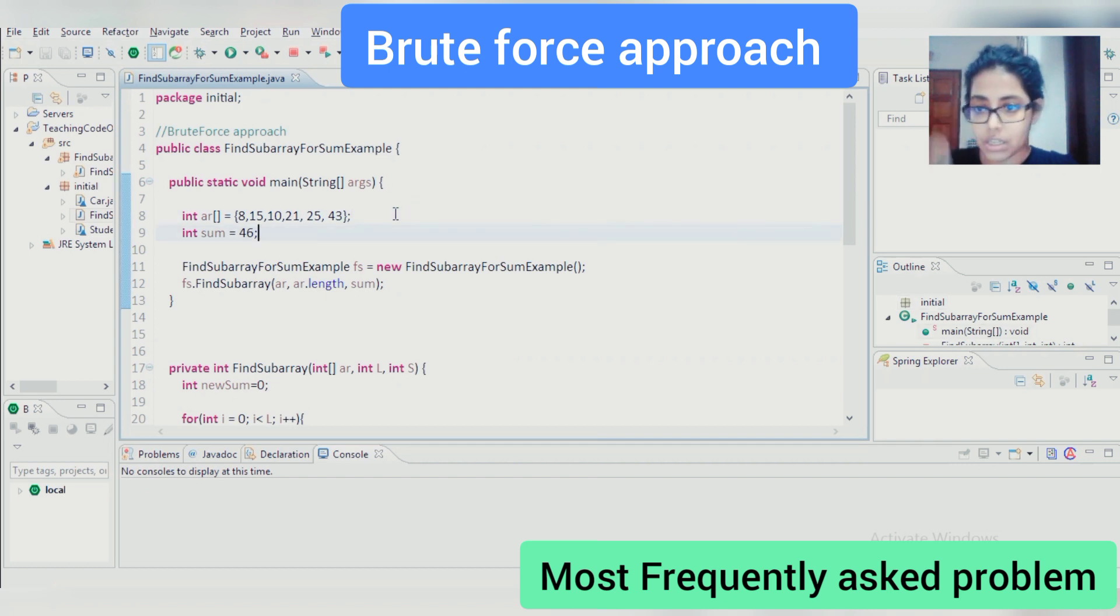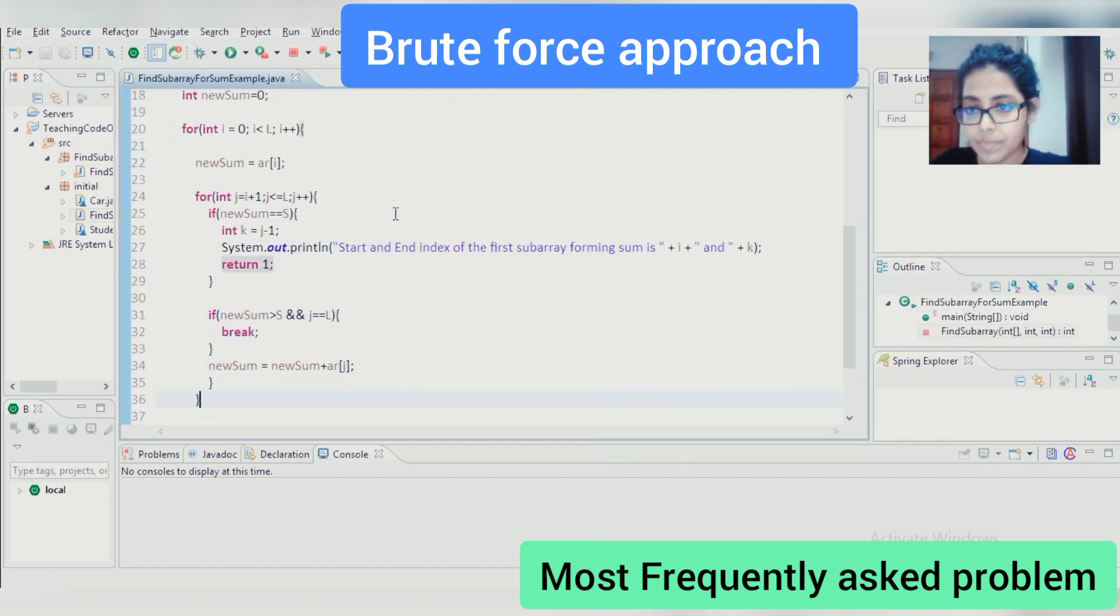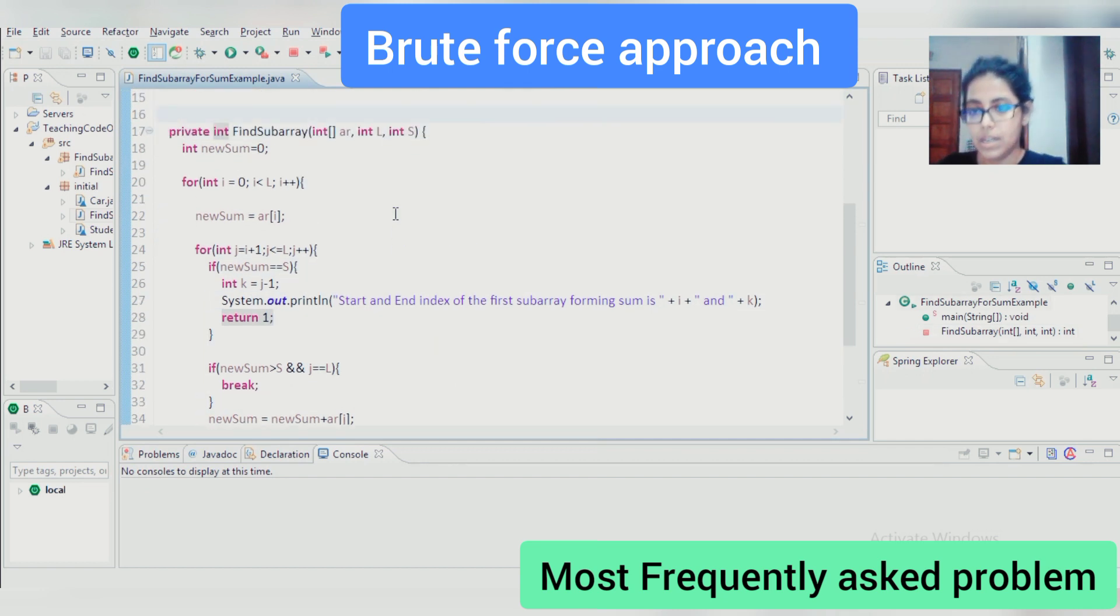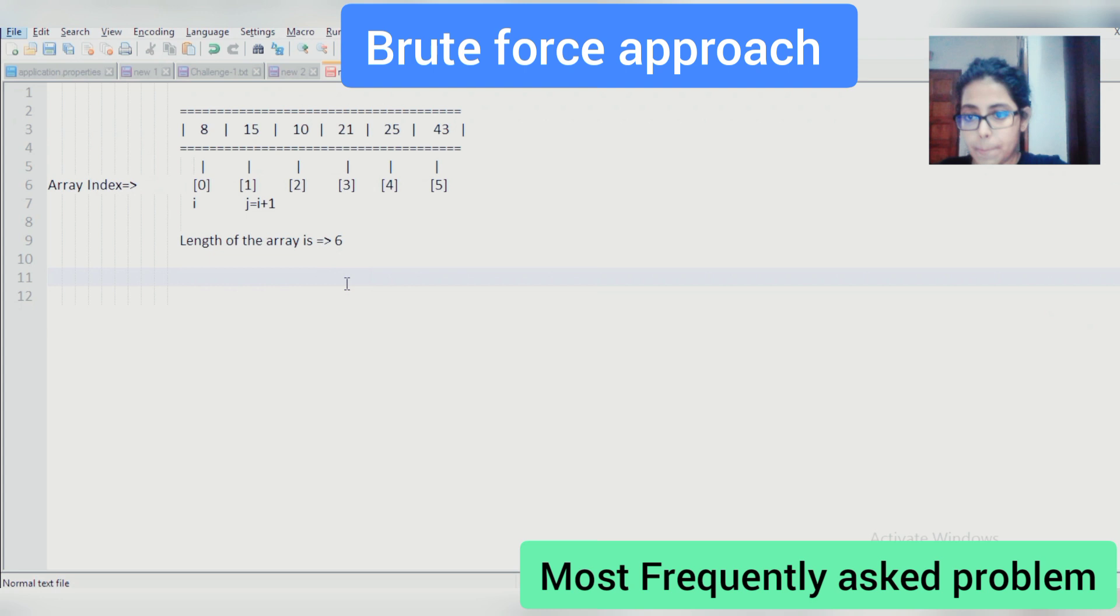Now, come to the actual logic of the code first. Let us understand first why we have taken two for loops. Suppose you have started traversing this array. You have to add 8 plus 15 plus 10 plus 21. In the first for loop, where i starts from 0, this will consider the very first value of our array, which is 8. And then, we are telling that j equals to i plus 1. It means this will consider the next value 15.